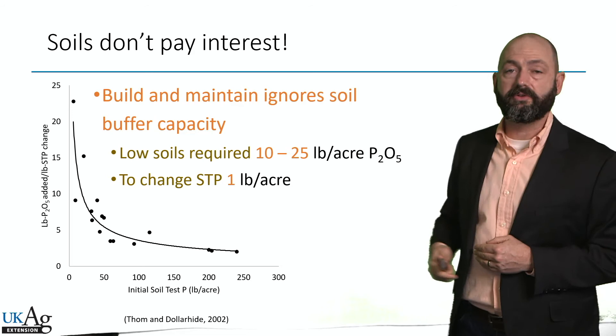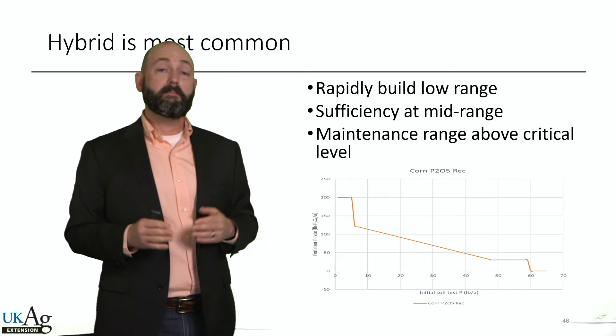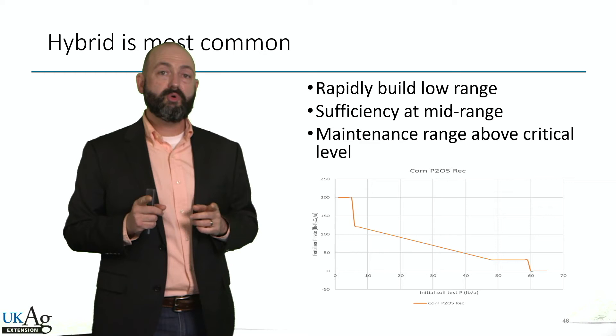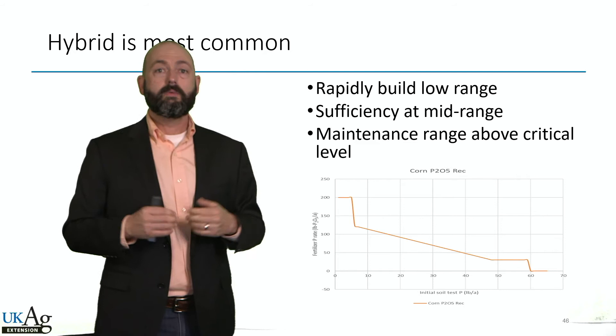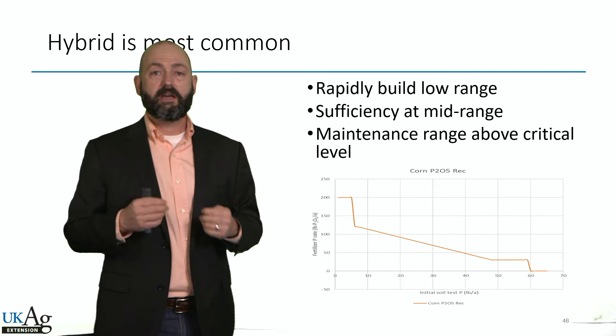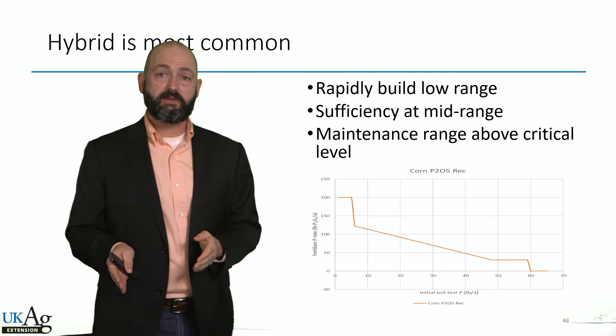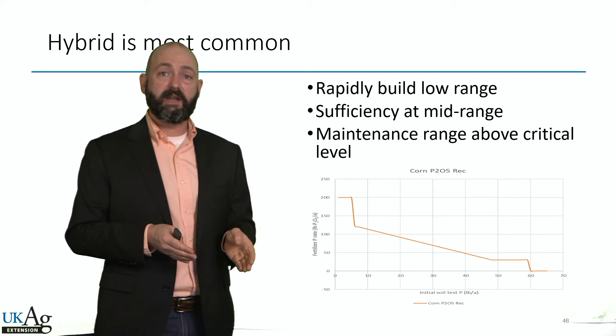Because of buffer capacity and the inefficiencies of build and maintain, but also because of the risk associated with a strict sufficiency recommendation, the hybrid approach is most common — but it's a gradient. Labs that give you a higher fertilizer recommendation — I often get the question: why does my lab recommend more fertilizer than the University of Kentucky? It's philosophical. The correlation and calibration data is the same in both recommendations; it comes down to economics or risk aversion. The university's recommendations are based on economics and returning the highest profit, whereas private recommendations tend to skew more conservative from a risk standpoint.